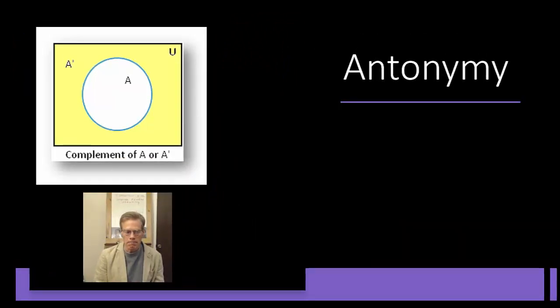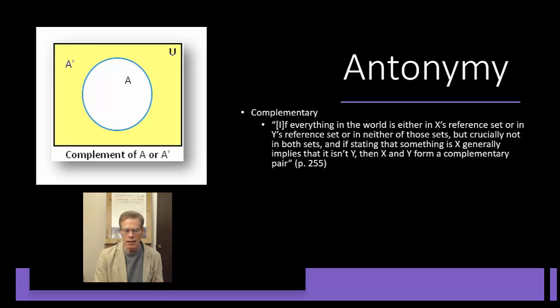Antonymy, this is where we've got opposites, but there's different types of opposites. We'll start with complementary antonymy. And this is the definition taken from Language Files 12. If everything in the world is either in X's reference set or in Y's reference set or in neither of those sets, but crucially not in both sets, and if stating that something is X generally implies that it isn't Y, then X and Y form a complementary pair.